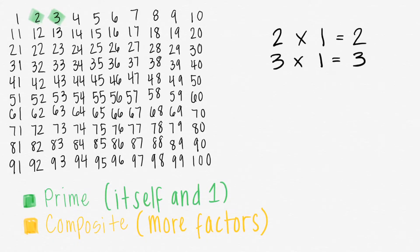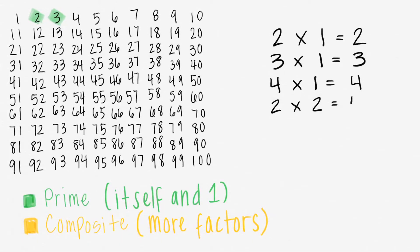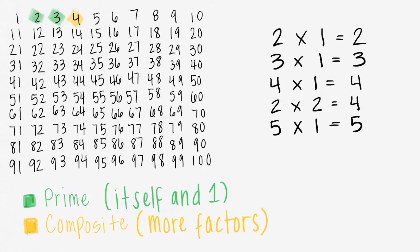To get 4, we can do 4 times 1 equals 4, but we can also do 2 times 2 equals 4, which means there's more than just 4 by itself, and that means that 4 is actually composite. To get 5, we can do 5 times 1 equals 5, and that's it, so 5 is prime.